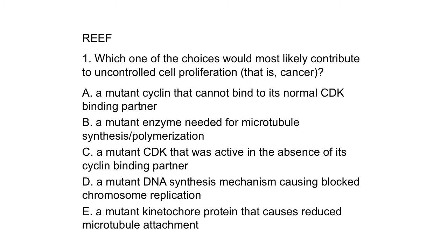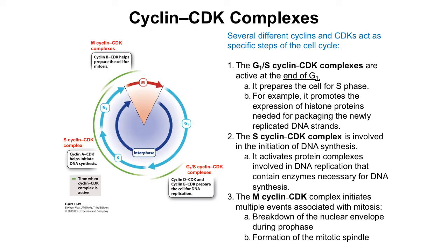Let's take a pause and try to answer this RIFT question. Which one of the choices would most likely contribute to uncontrolled cell proliferation, that is, cancer? A: a mutant cyclin that cannot bind to its normal CDK binding partner; B: a mutant enzyme needed for microtubule synthesis; C: a mutant CDK that was active in the absence of its cyclin binding partner; D: a mutant DNA synthesis mechanism causing blocked chromosome replication; or E: a mutant kinetochore protein that causes reduced microtubule attachment.